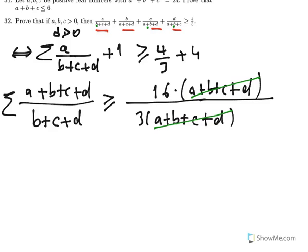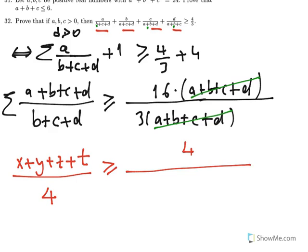Well, if you write precisely the AM-HM inequality: (x+y+z+t)/4 is greater than or equal to 4 over (1/x + 1/y + 1/z + 1/t).